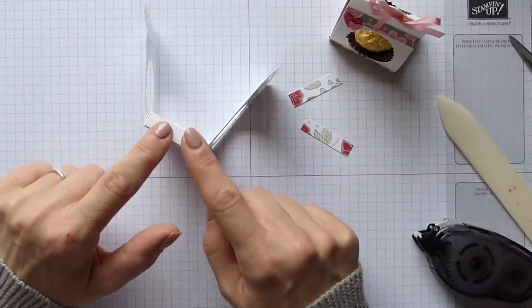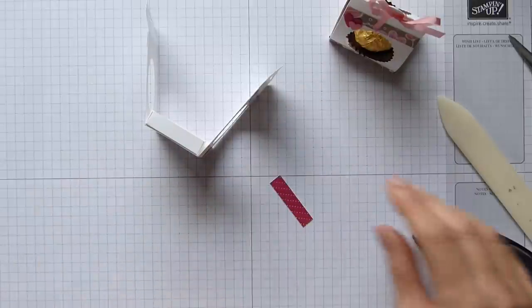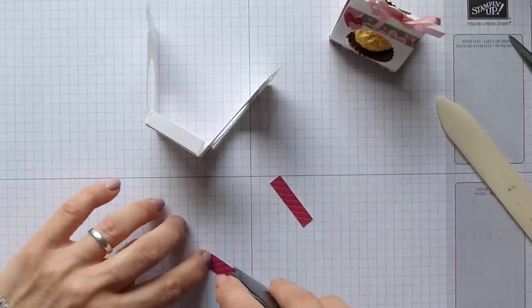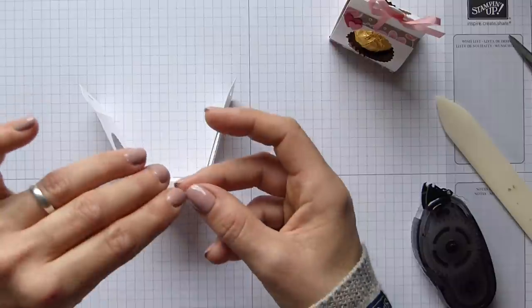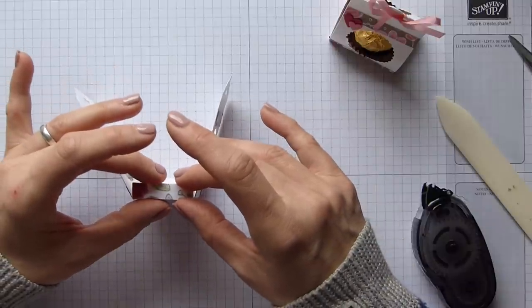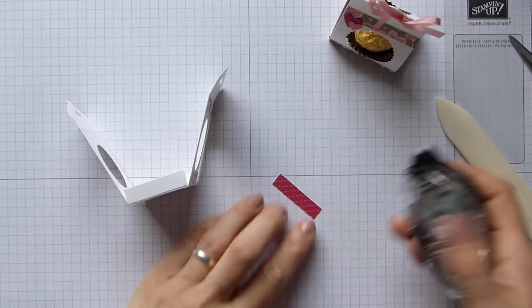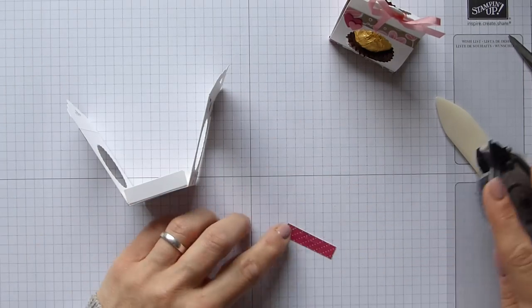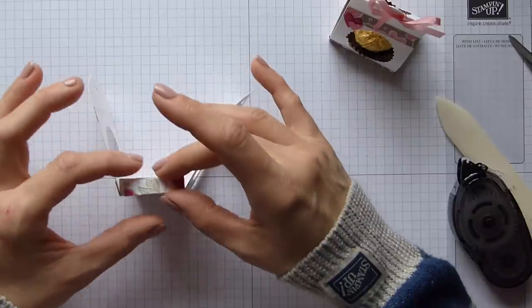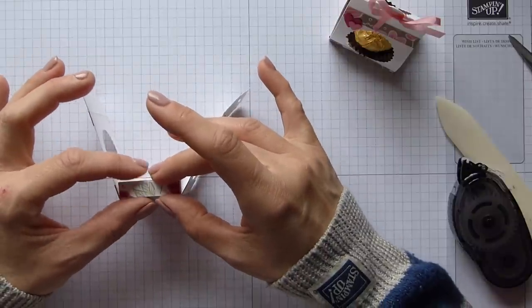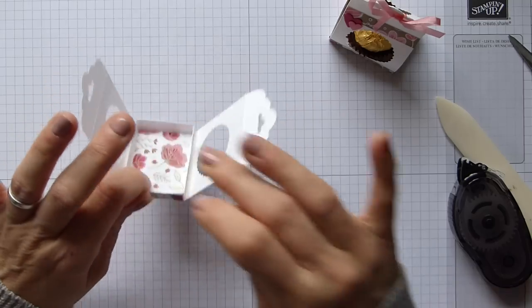So front and back, we have these cute little strips. And then we're just going to add two to the sides here. And these ones are one and three eighths by one and a half. So one centimeter by 3.8. So it's a tiny, tiny measurement. But again, as you can see, I'm just using snail and sticking them on the sides of the boxes.